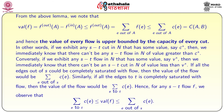If all edges out of s could be completely saturated, the flow value would be the sum of c(e) over edges out of s. Similarly, if all edges into t were completely saturated, the flow value would be the sum of c(e) over edges to t. Hence, for any s-t flow f, the sum of c(e) over edges to t is less than or equal to val(f), which is less than or equal to the sum of c(e) over edges out of s.